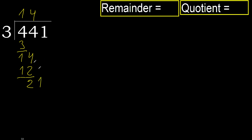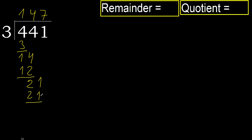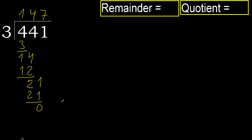21. 3 multiplied by 7 is 21, which is not greater. Subtract: 21 minus 21 is 0. There is no next number, therefore finish.